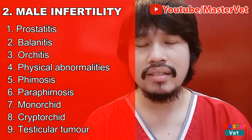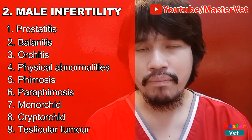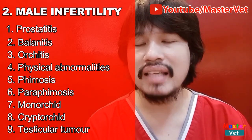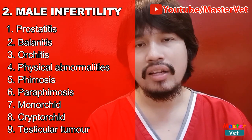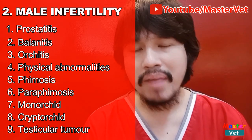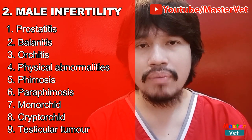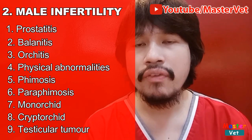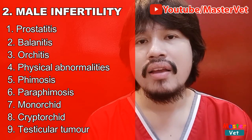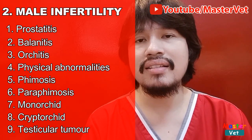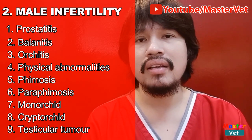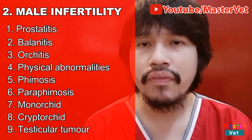Kapag may balanitis, kung saan yung prepuce — yung nakabalot na balat doon sa ari ng lalaki — ito ay namamaga. So, maapektuhan yung mating nung dog, magkukos ito ng male infertility. Kapag may orchitis naman, kung saan namamaga yung testicles, maring caused by infection, or trauma, or injury. So, magkukos ito ng male infertility.